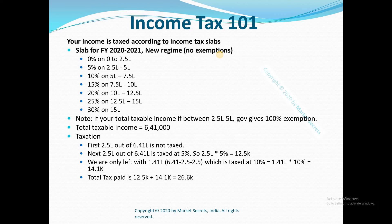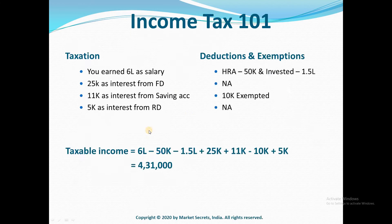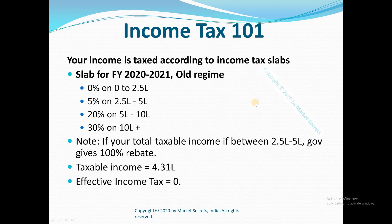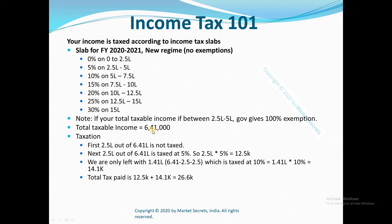For most people, the old regime is still beneficial. Under the new tax regime, if your total income is between 2.5 lakhs to 5 lakhs, the government gives 100% exemption on your tax as well. So if your total income is below 5 lakhs, you don't have to pay any taxes. But for our earlier example, the total income is 6,41,000. And since exemptions are not allowed under the new regime, the entire 6,41,000 will be my taxable income. So now you need to calculate what your taxes are.